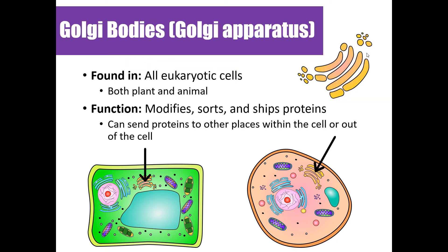Golgi bodies, also called the Golgi apparatus, are like a folded membrane found in eukaryotic cells — specifically plant and animal cells. Their function is to modify, sort, and ship proteins, similar to a post office. They can package proteins and send them to places both inside and outside the cell via vesicles, which are transportation systems for proteins.